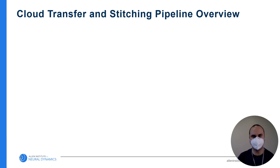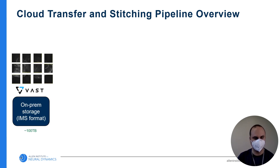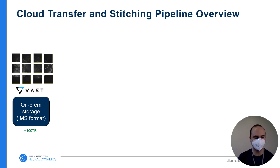To give some motivation for what we'll be talking about today: after acquisition, the raw data is stored on a local flash storage system with a one petabyte capacity. Since each dataset can be up to hundreds of terabytes, we need to move the data out of the building and into cloud storage as quickly as possible. This is especially true since we'll be imaging multiple brains per week, so it is super important to have a data transfer pipeline that can keep up with the rate of acquisition. We also need to compress the data to reduce transfer time over the network and save on cloud storage costs.